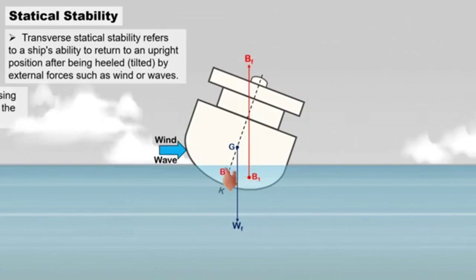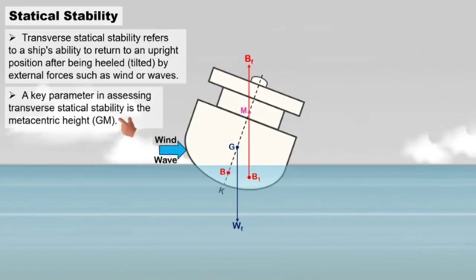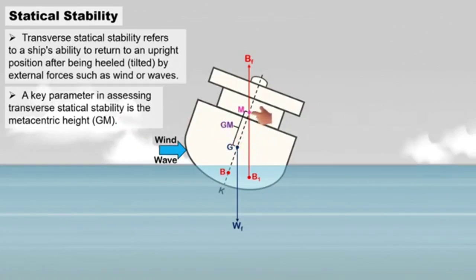A key parameter in assessing transverse statical stability is the metacentric height, GM, which is the distance between the center of gravity, G, and the metacenter, M.